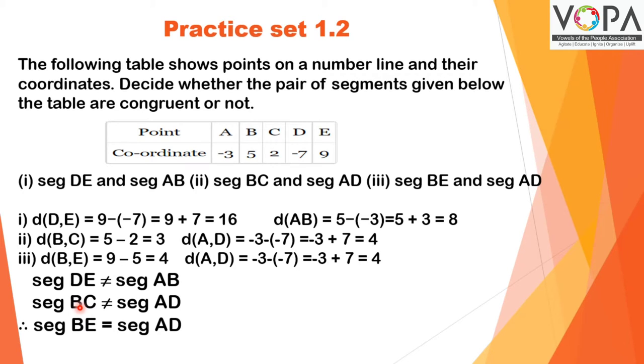Practice set 1.2. The following table shows points on a number line and their coordinates. Decide whether the pair of segments given below the table are congruent or not. Points A, B, C, D, E and coordinates given are -3, 5, 2, -7, and 9.